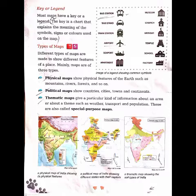Now, types of maps. We have different types of maps to show different features of a place. Mainly, maps are of three types: the first is a physical map, the second is a political map, and the third is a thematic map. Physical maps show the physical features of the earth such as mountains, forests, and rivers. Political maps show countries, cities, towns, and continents. Thematic maps give a particular kind of information about a particular area, such as weather, transport, and population.